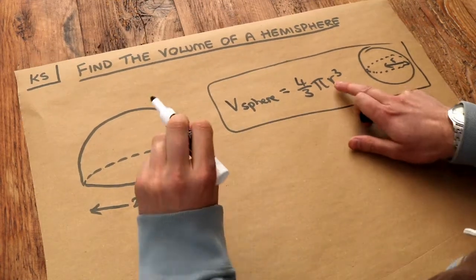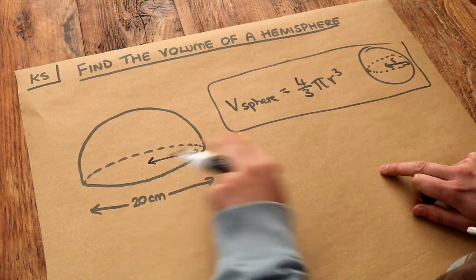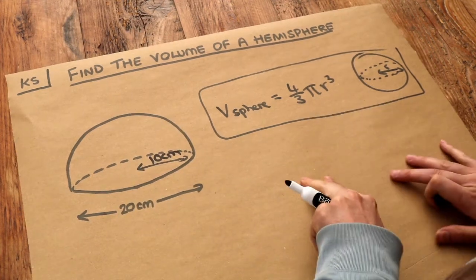Now firstly note what the radius is because we need the radius not the diameter. If the diameter is 20, the radius of the sphere is going to be half that which is 10 centimeters, so be careful what you use in your formula.